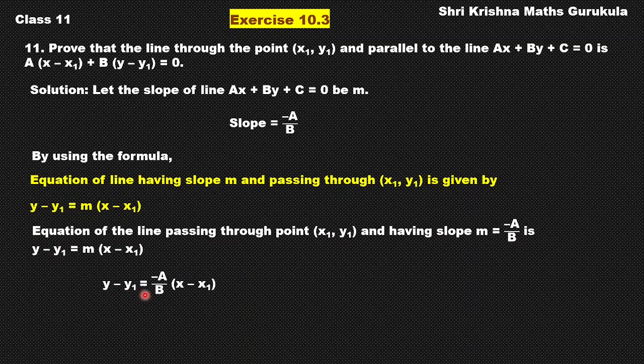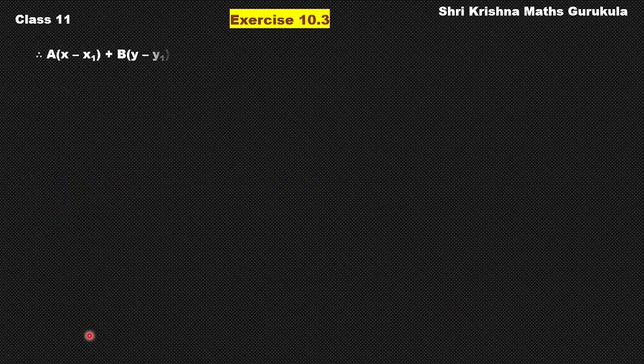So y minus y1 is equal to minus A by B into x minus x1. Now we shall cross multiply this, which gives us B into y minus y1 is equal to minus A into x minus x1. Now just take this whole term to LHS and rearrange. If you bring this x term to LHS and rearrange, it is A into x minus x1 plus B into y minus y1 is equal to 0.